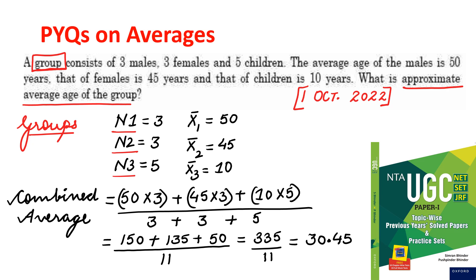So according to this question, n1 is 3, that means number of males. N2 represents number of females is equal to 3. N3 represents number of children is equal to 5. X bar 1 is the average age of the males, given in the question, that is 50. X bar 2 is equal to 45. And x bar 3 is equal to 10. Now using the formula, we can quickly calculate the average age of the group.